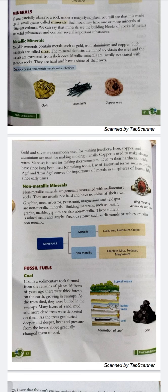Non-metallic minerals are generally associated with sedimentary rocks. They are usually not hard and have no shine of their own. Graphite, mica, asbestos, potassium, and magnesium are non-metallic minerals. Building materials such as basalt, granite, marble, and gypsum are also non-metallic. Precious stones such as diamonds and rubies are also non-metallic.